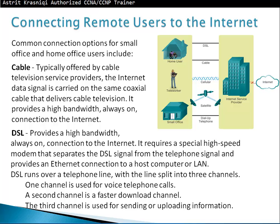Different ways to connect remote users to the Internet: imagine moving to a new house — first thing you want is internet access. Your first choice is cable, offered by a service provider who uses the same coaxial cable to deliver both TV signal and internet. However, cable isn't always available — if your street has no cable infrastructure laid yet, you'll have to wait.